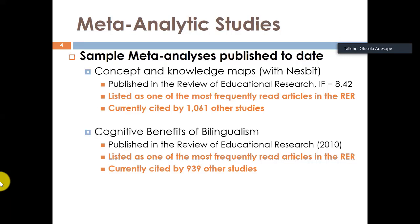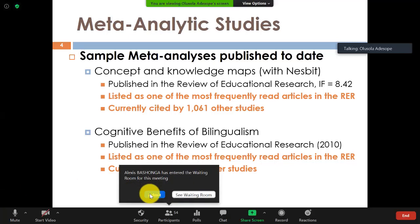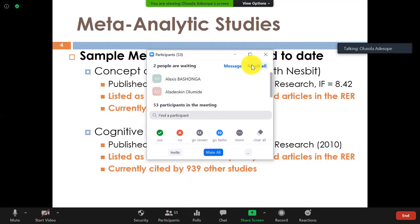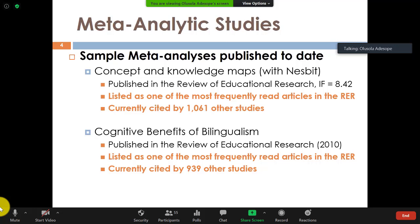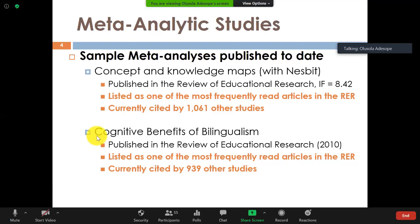This is in the field of language and literacy. We were very much interested at the time when there was so much tension in the US about whether the country should go monolingual or continue to be multilingual. So we did a meta-analysis to examine the cognitive benefit that bilingualism brings. It was also published in the Review of Educational Research in 2010, listed as one of the most frequently read, and cited by well over 900 other studies.